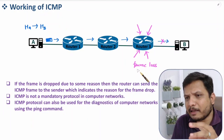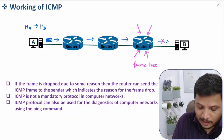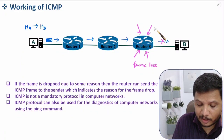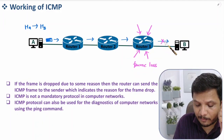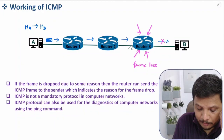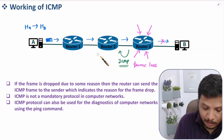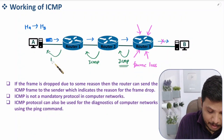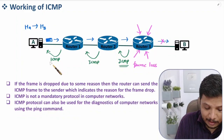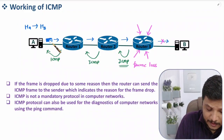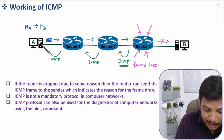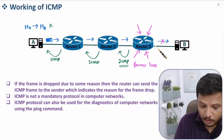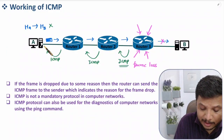With ICMP, we can make IP a bit more reliable. If Router 3 is so congested that it cannot forward the frame, Router 3 will generate an ICMP frame. That ICMP frame is passed back through Router 2, then Router 1, and finally reaches Host A. This ICMP frame tells Host A that the transmitted frame was lost somewhere in the medium.